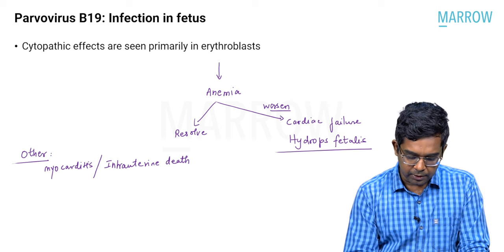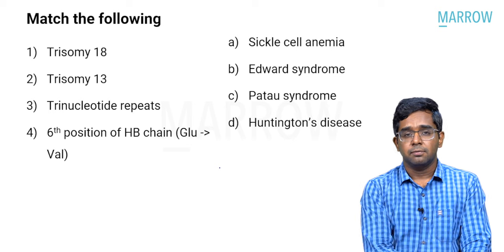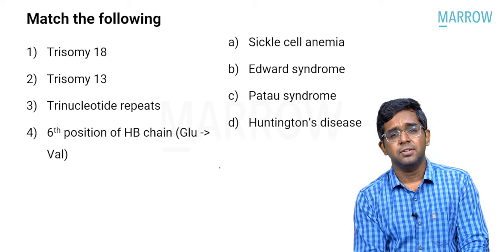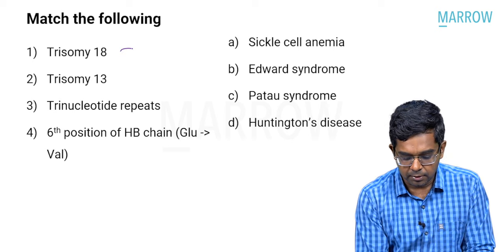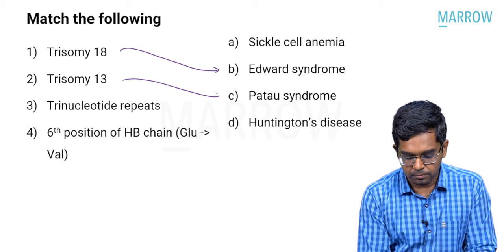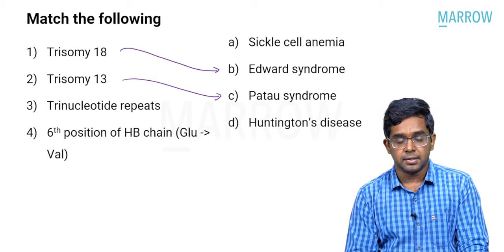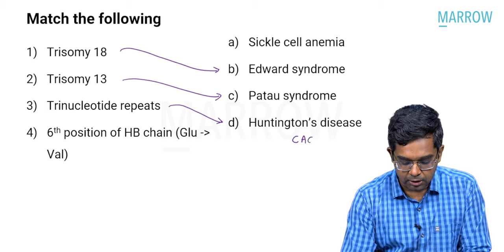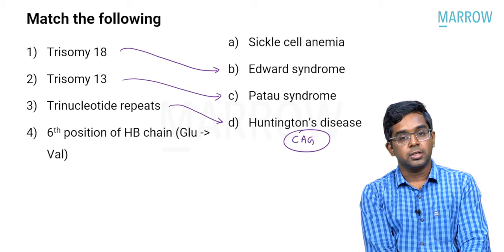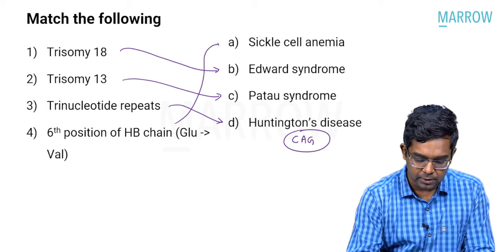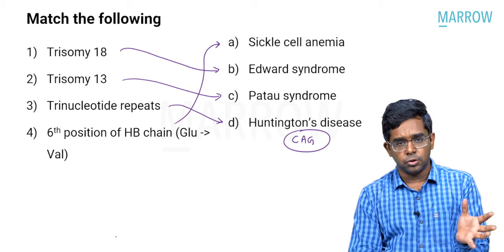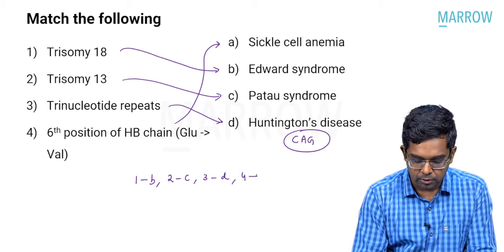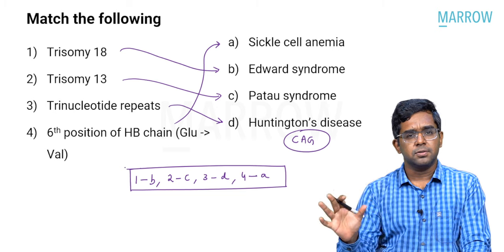Moving to the next question — a match-the-following type: Trisomy 18 is Edwards syndrome; Trisomy 13 is Patau syndrome; trinucleotide repeats — is it sickle cell anemia or Huntington disease? Obviously it is Huntington disease, and the trinucleotide repeat is CAG repeat. Sixth position of the hemoglobin chain where glutamate is replaced by valine is typical of sickle cell anemia. The answer is 1B, 2C, 3D, 4A — a straightforward question.